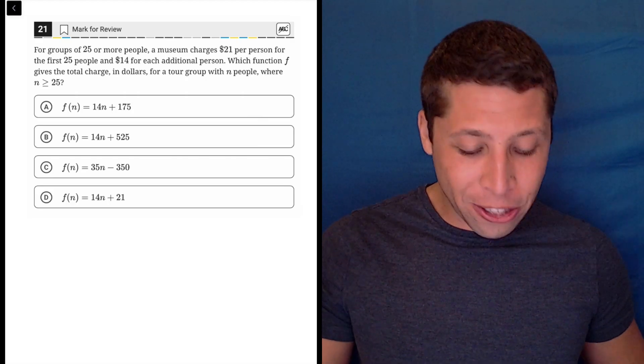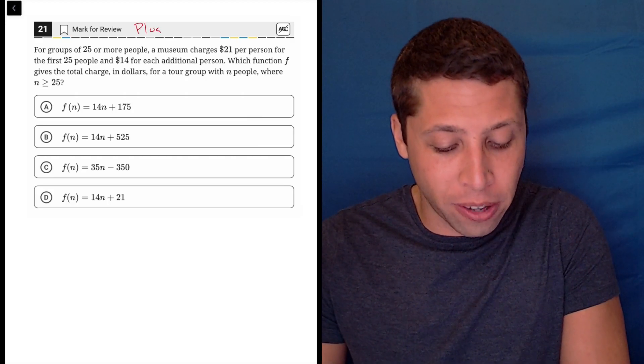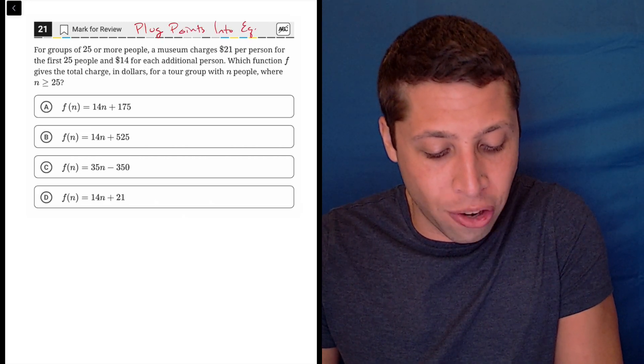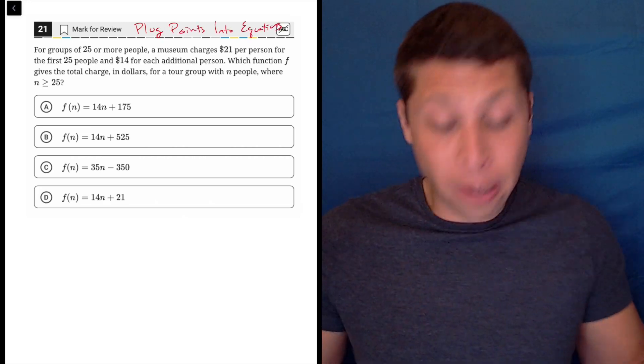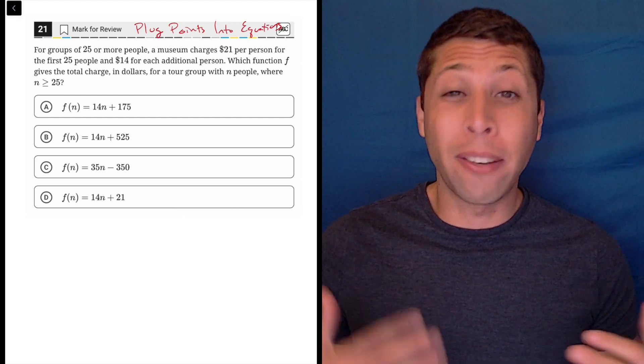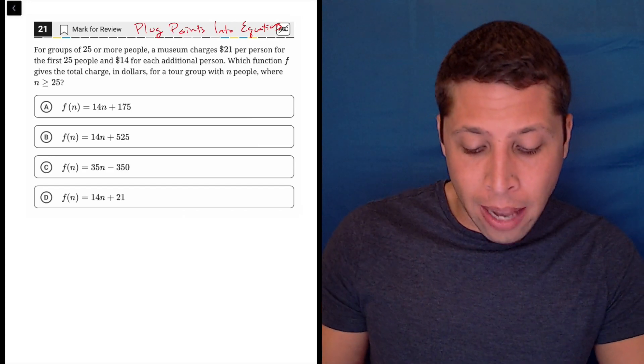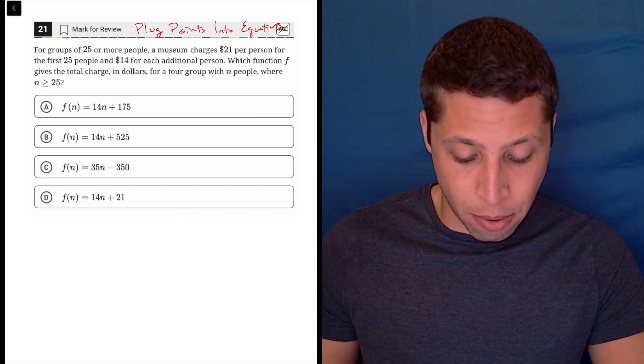This question becomes so much easier if we just think about it in terms of our favorite strategy: plug points into equations. I have a bunch of equations, so that part's obvious. Do I have any points? That would mean we'd have values for n. They talk about n a lot, but they don't actually give us any number.